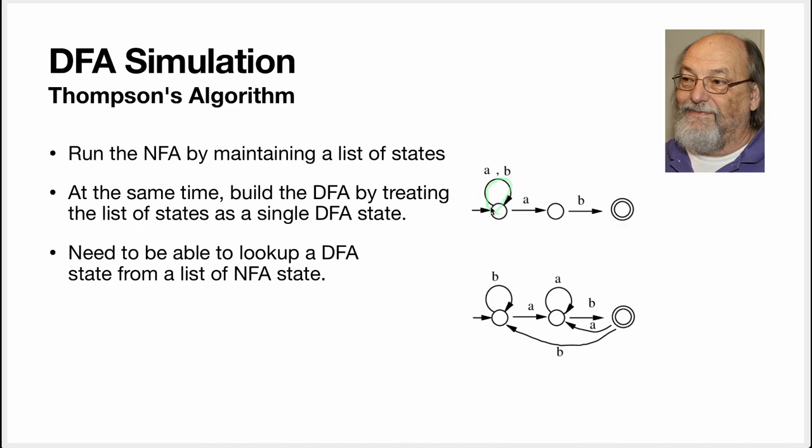And so if we consider B transition, it's this list. And we already have a DFA state for this list. It's this node. And for the A transition, it's this list. And we also already have a state for that. It's this one. And so we'll again encode A transition here to that one and the B transition here.